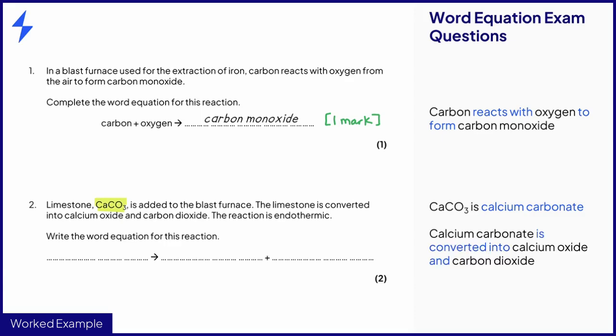This means that the key information from question two is that calcium carbonate is converted into calcium oxide and carbon dioxide. So, the reactants in this equation is calcium carbonate for one mark. The question tells you that the two products are calcium oxide and carbon dioxide. Both products are required for the second mark. Question two is a good example of how marks can be split in two-mark word equation questions.